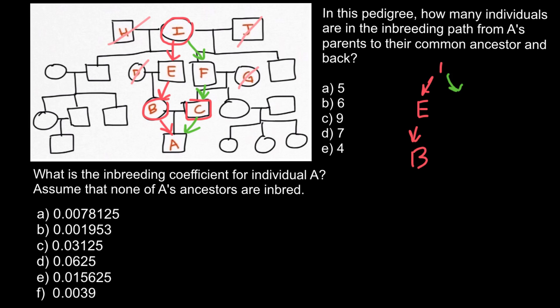We have person I, and here we're going to get E and B. Once again, we exclude person A. And here we have person F and person C. So as you see, we have one, two, three, four, five people.